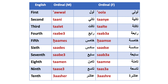Fourth: the masculine form is rabi. The feminine form is رابعة. Fifth: خامس. Sixth: the masculine form is سادس, and the feminine form is سادسة.